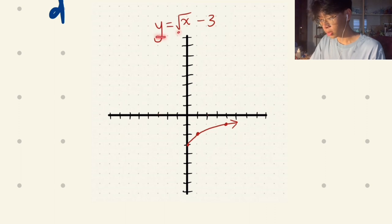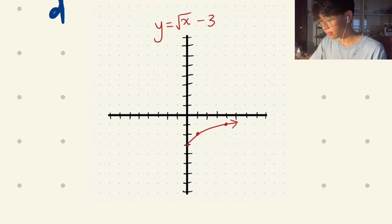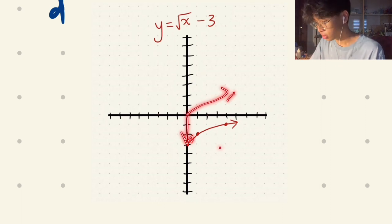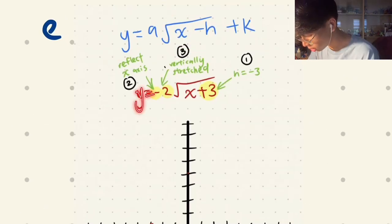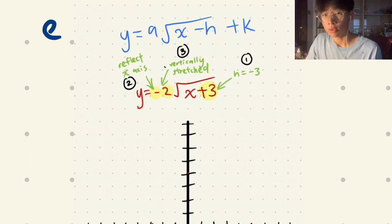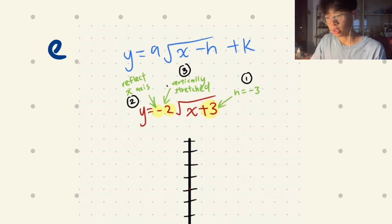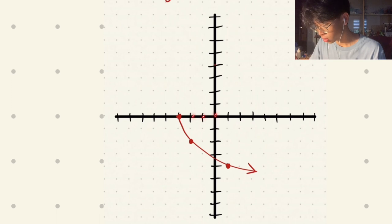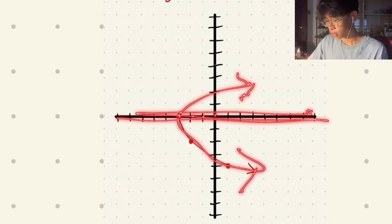For question d, y equals √x - 3: outside is -3, so k equals -3 and the graph moves down 3 units. For question e, y equals -2 times √(x+3): the negative coefficient reflects the graph over the x-axis, and the +3 inside means h equals -3, so the graph shifts left 3 units before reflecting.